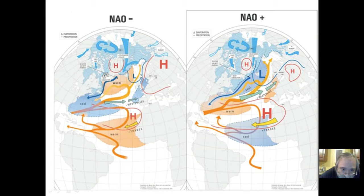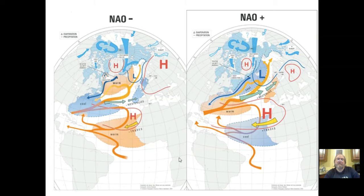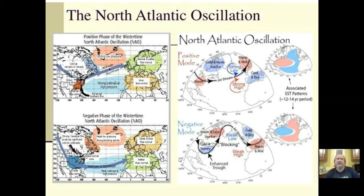Here's the Azores High and the Icelandic Low. Remember from the rotating systems video, the high and low pressure systems often occur next to each other because air pressure moves in 3D — where you have convergence at the base of the low pressure system and divergence at the top, that leads to convergence at the top of the high and divergence at the bottom, creating vertical convection cells. In the positive phase, the Azores High and Icelandic Low both strengthen, and you can see what happens with the storm tracks.